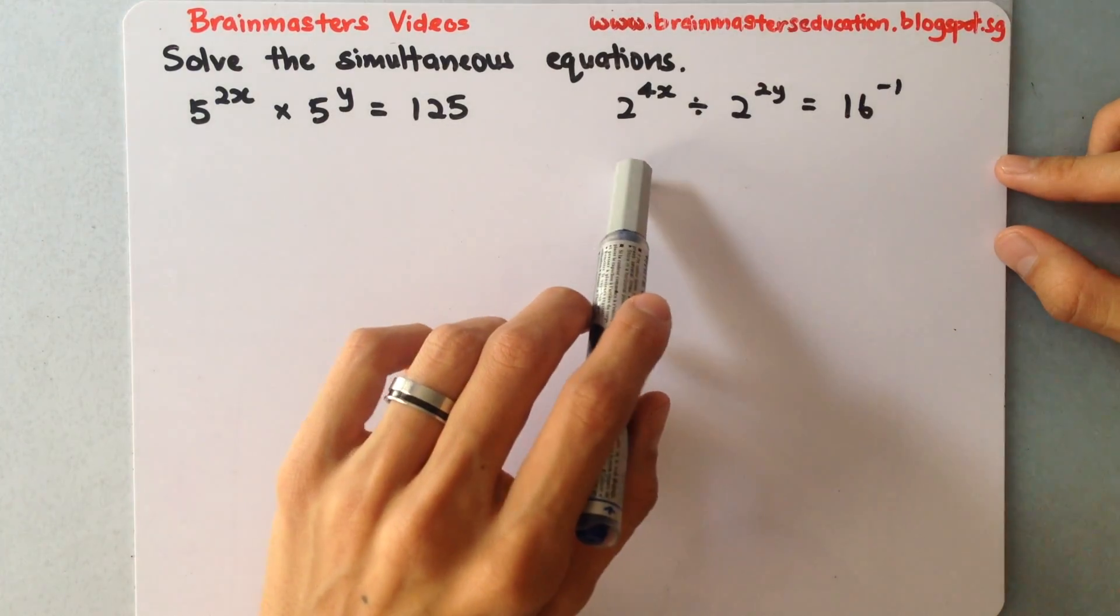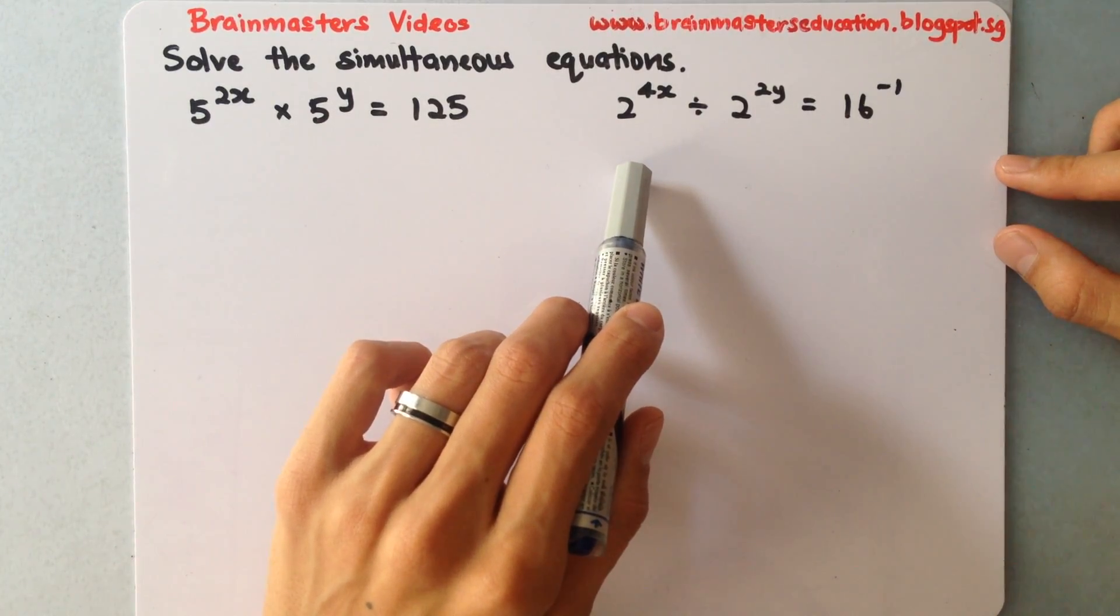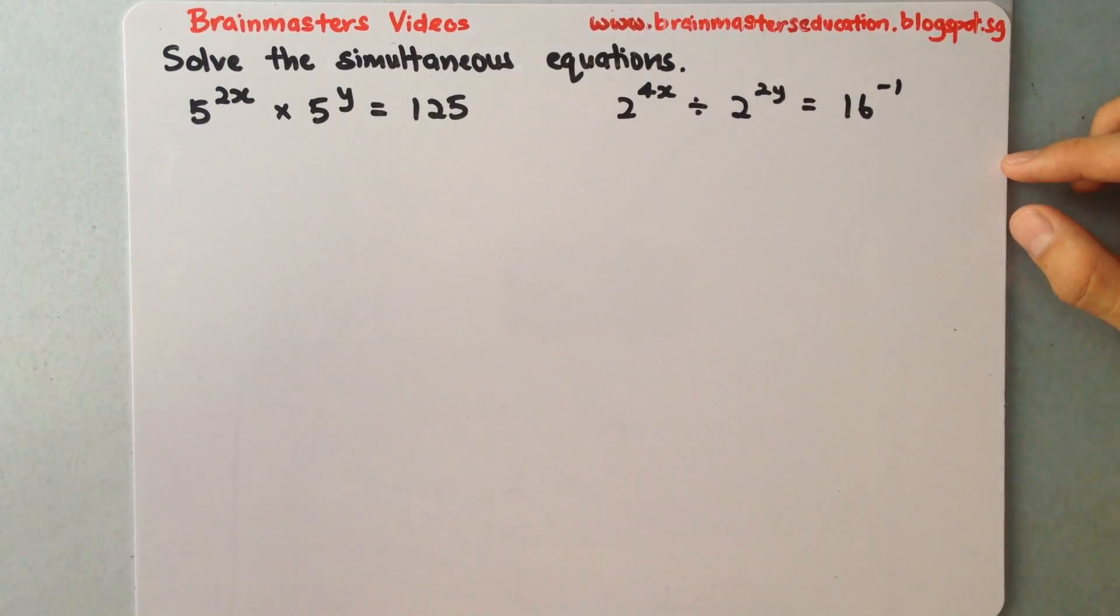And the second equation is 2 to the power of 4x divided by 2 to the power of 2y equals 16 to the power of negative 1. So what we need to do is we will need to change these two equations into a much simpler equation from here.